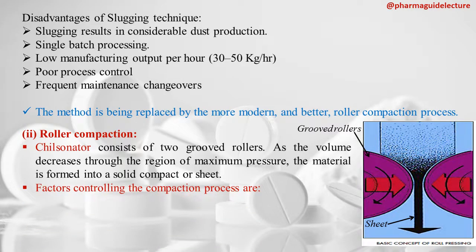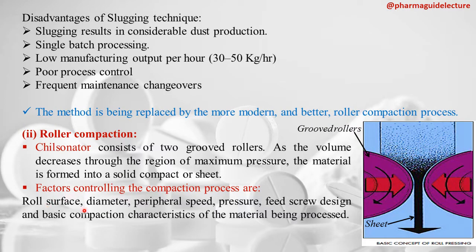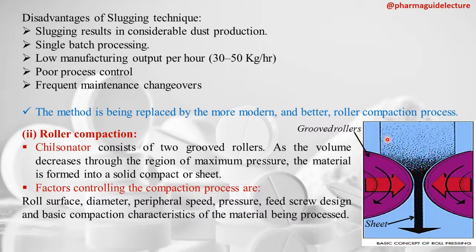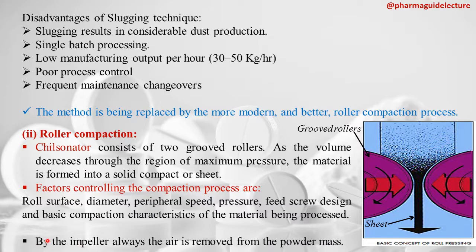Factors controlling the compaction process include roll surface diameter, peripheral speed, hydraulic pressure on the floating roller, feed screw design, and the compaction characteristics of the powder. Air is removed from the powder mass by an impeller, and a vacuum system is connected to the feed to remove air before compaction.